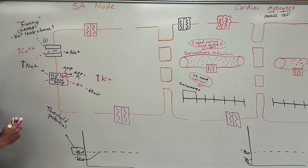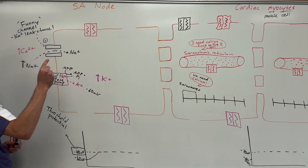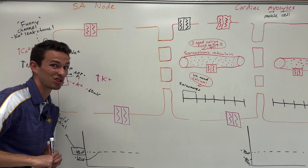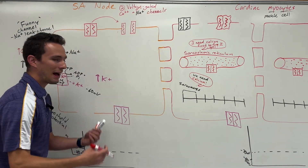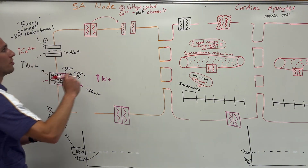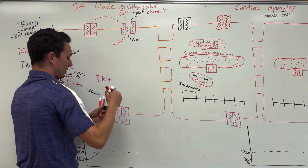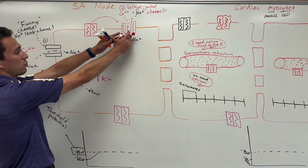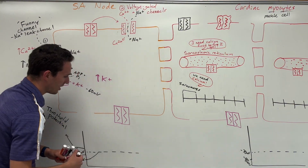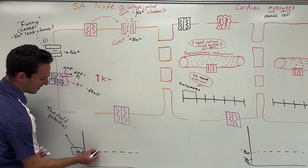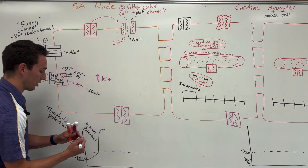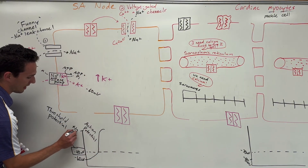Once the SA node hits that threshold potential, we've changed the voltage, so now we can open these voltage-gated calcium and sodium channels — they kind of look like Harry Potter's forehead. Since calcium and sodium are both high outside the cell, those two things are going to flow in from high to low. There are literally thousands of these in the SA node, so there's a massive influx of positive ions. The graph begins massively going upward — that's called the action potential, otherwise known as depolarization. We're getting away from being negative, and this can get up to about positive 10 millivolts.